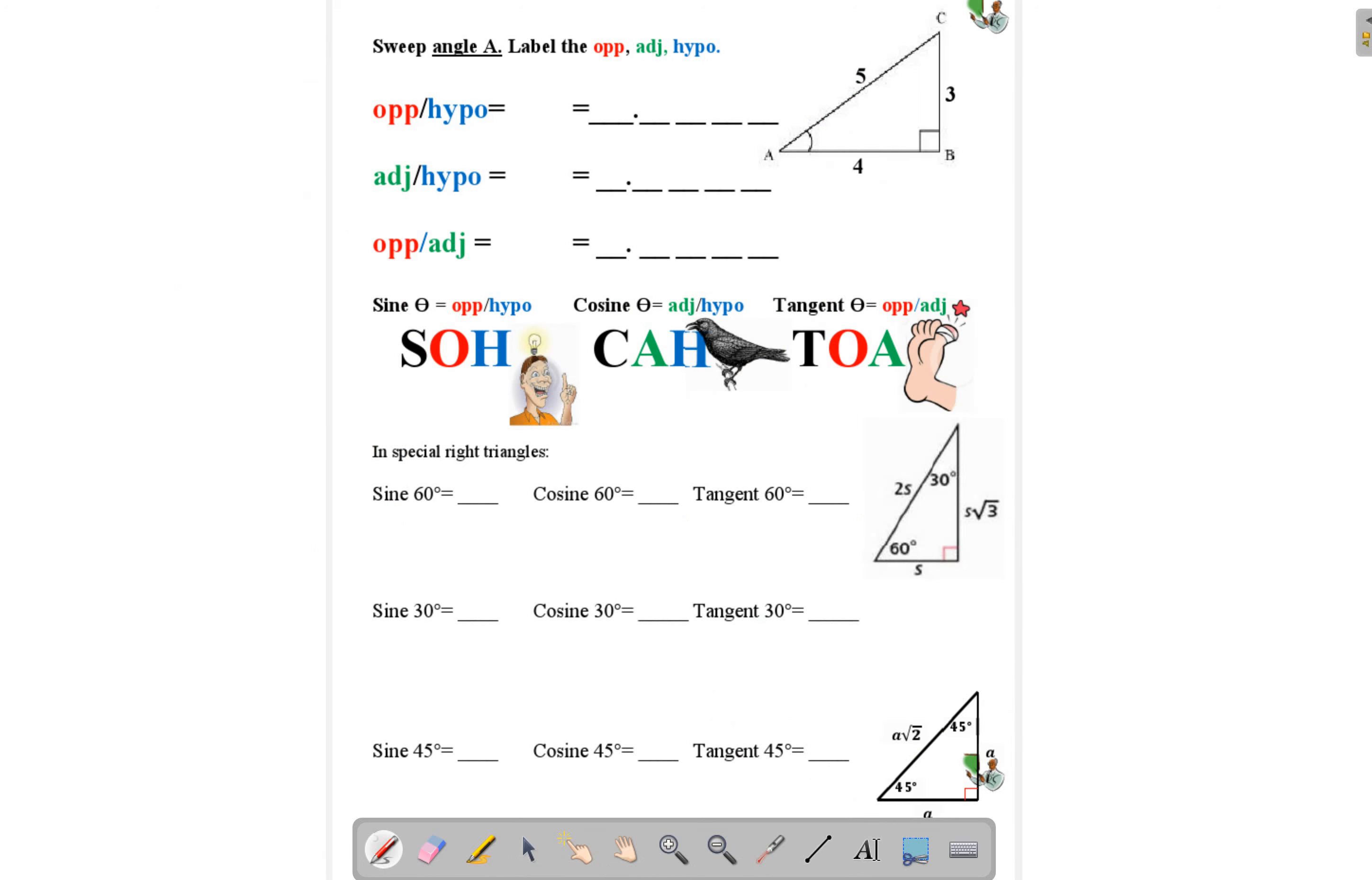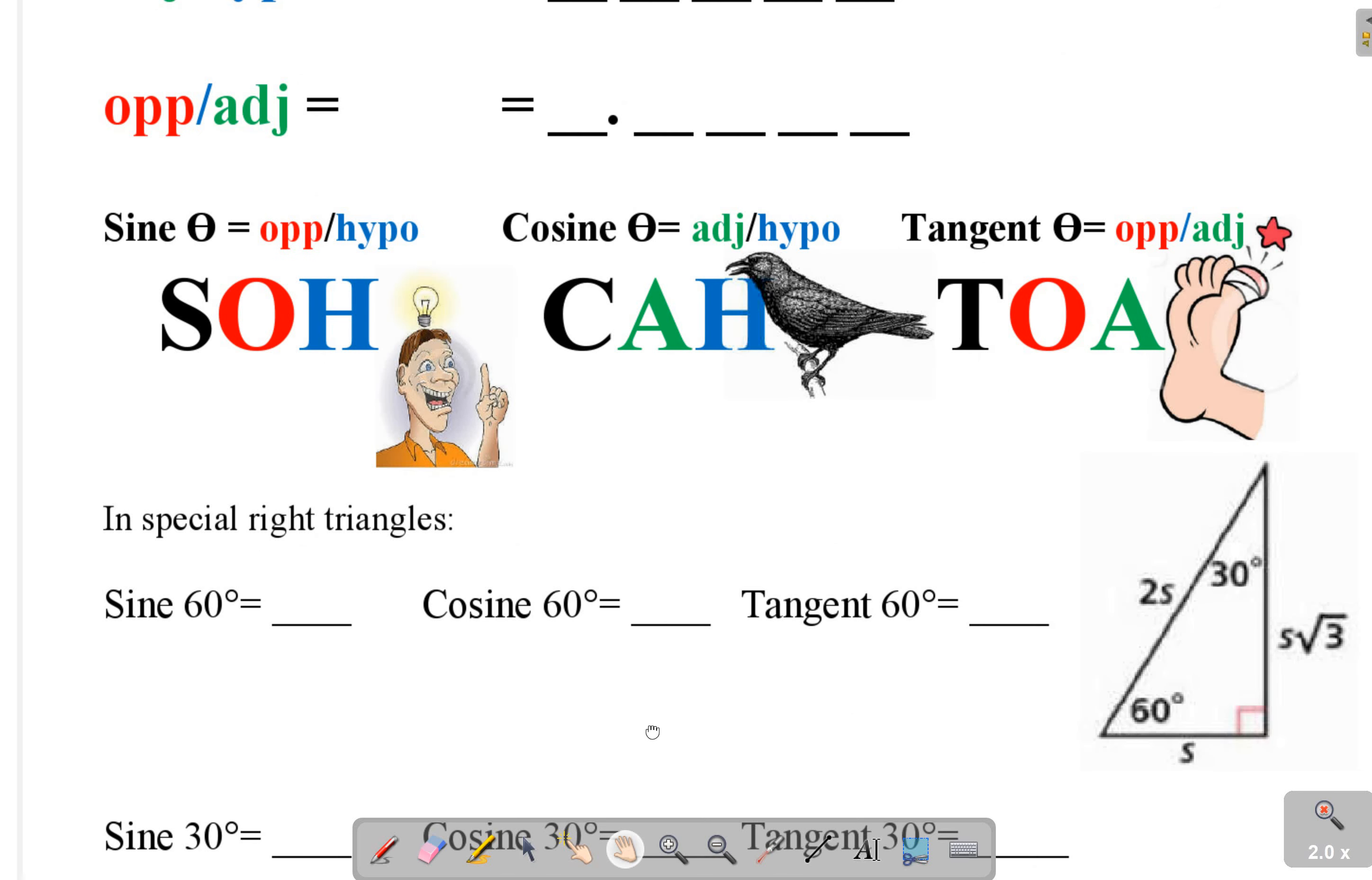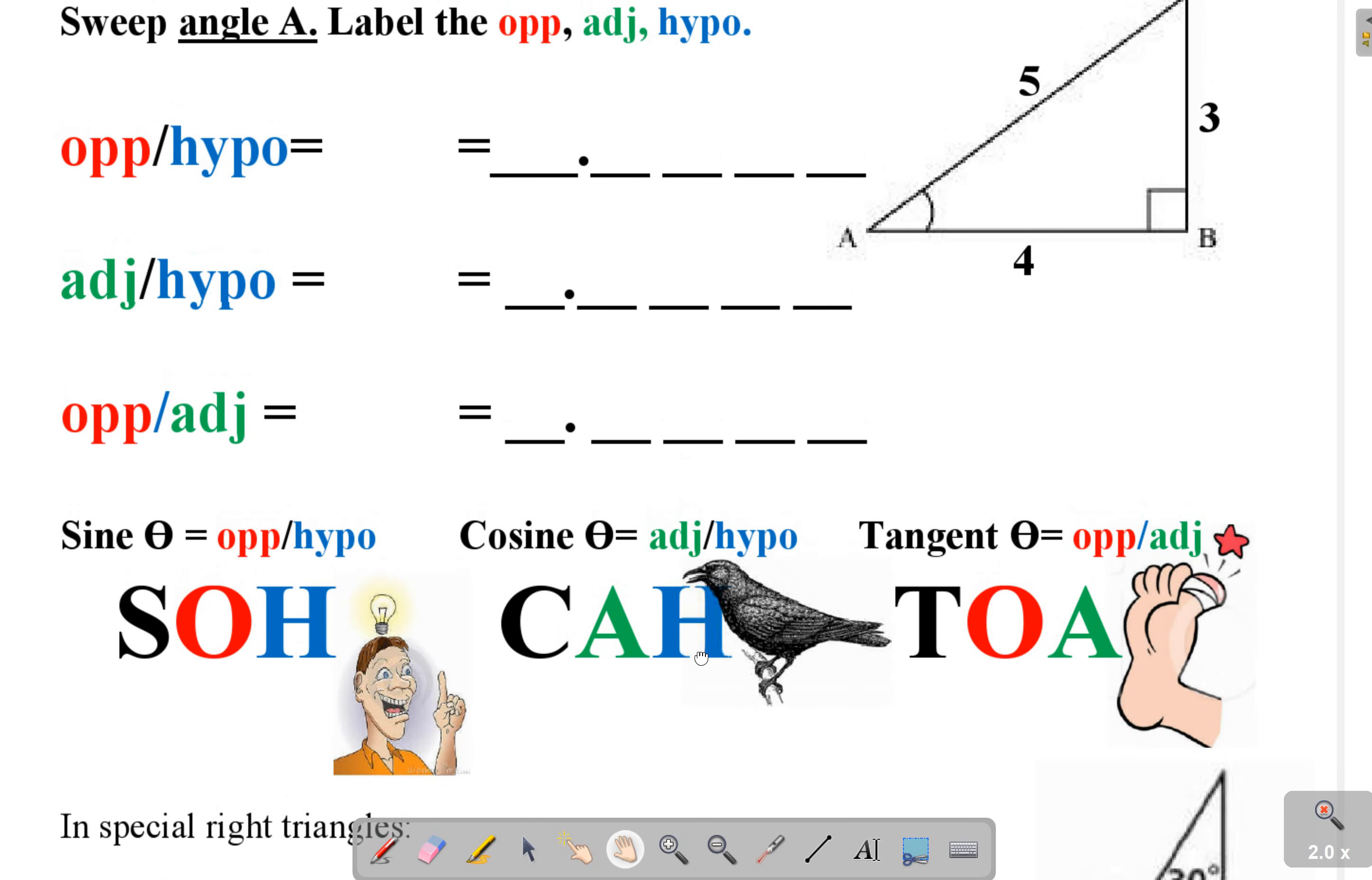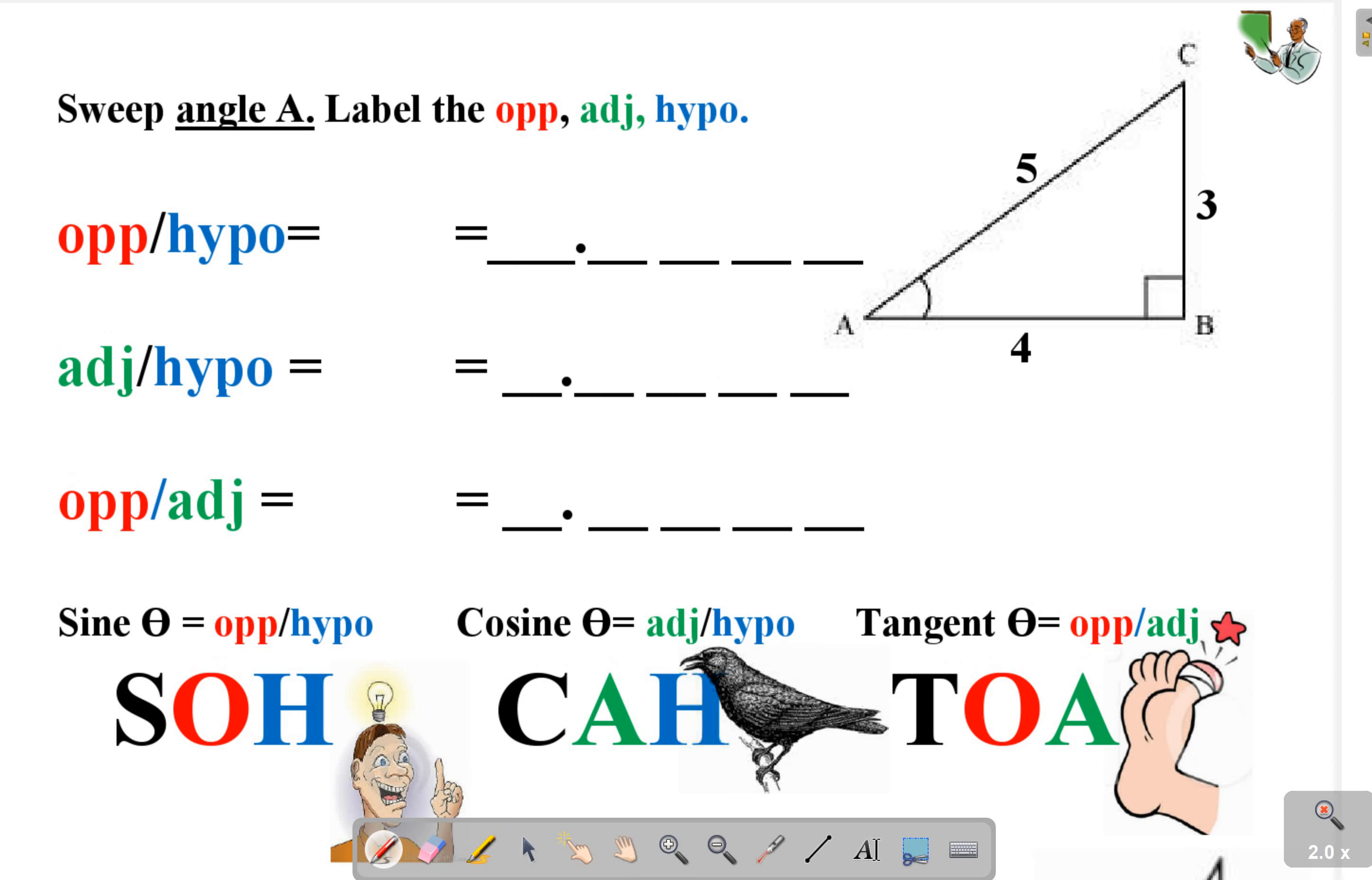We're going to be doing three different ratios. These ratios have specific names. We're going to sweep angle A, and then from angle A, 3 would be considered the opposite, 4 is the adjacent, 5 is the hypotenuse.